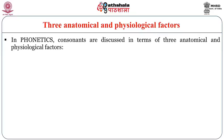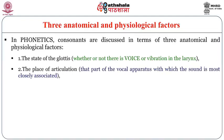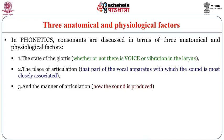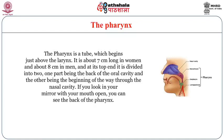There are three anatomical and physiological factors. First, the state of the glottis — whether or not there is voicing or vibration in the larynx. Second, the place of articulation — the part of the vocal apparatus with which the sound is most closely associated. Third, the manner of articulation — how the sound is produced. The pharynx is a tube which begins just above the larynx, about 7 cm long in women and about 8 cm in men. At its top end it is divided into two: the back of the oral cavity and the beginning of the nasal cavity.